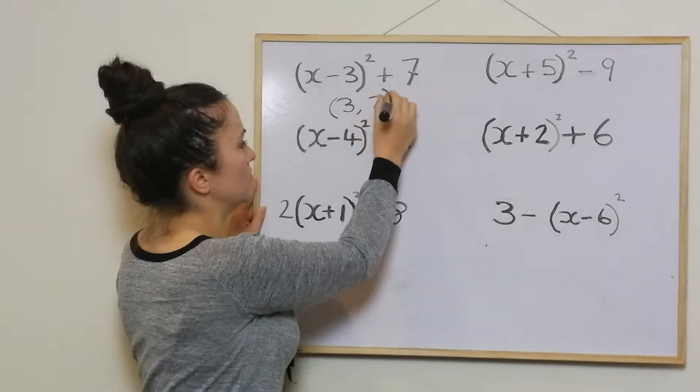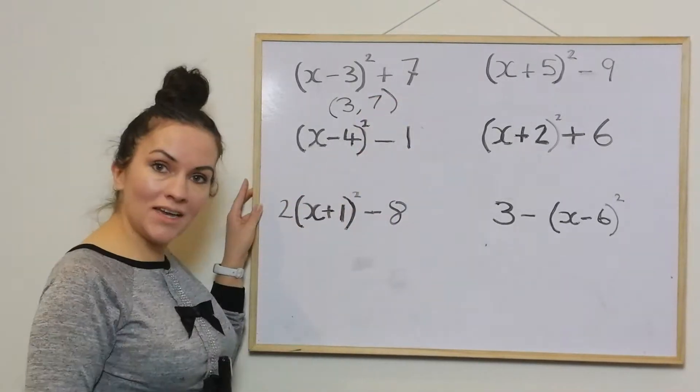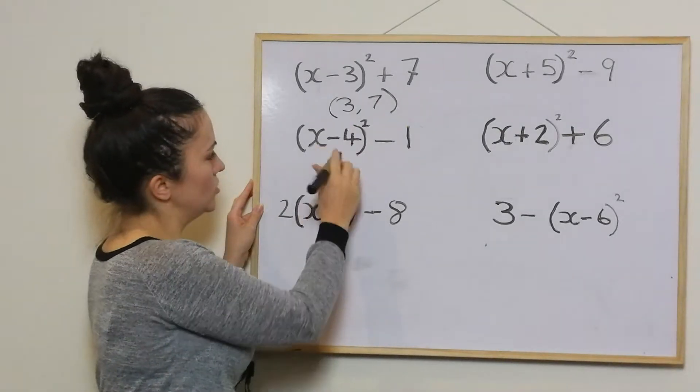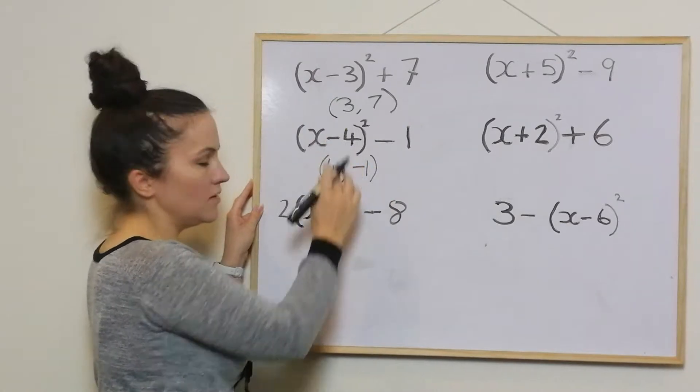And then the outside number just stays the same. That's the turning point. This one here, you change the number in the bracket to be positive, so this just becomes 4 and 1 outside stays the same.